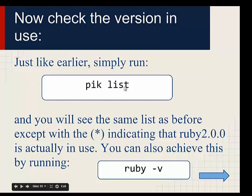You can always check to see which version of Ruby is in use by saying PIC list and seeing where the star is.